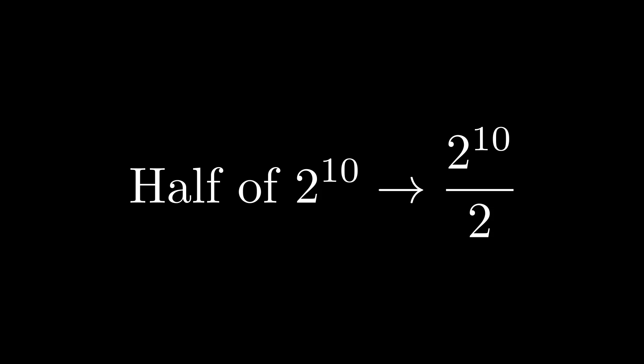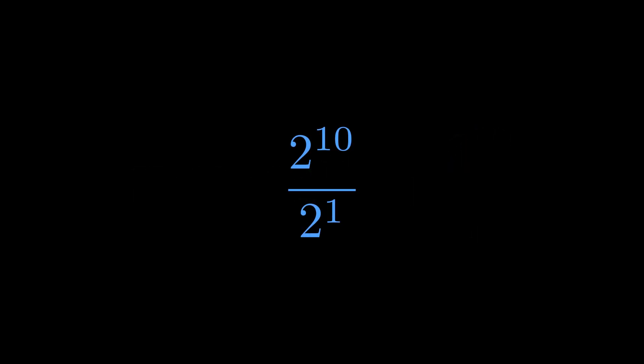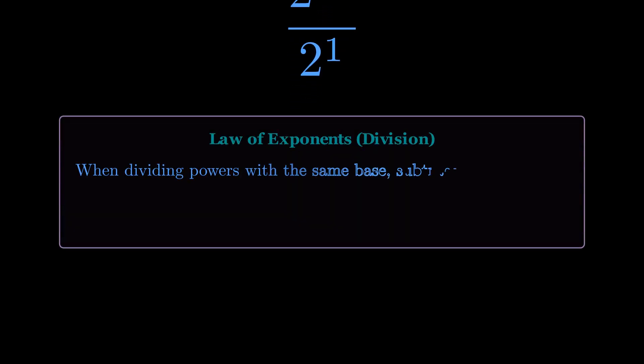So we can write this problem as a fraction: 2 to the power of 10 divided by 2. Now to make things a little clearer, we can remember that any number by itself is really that number to the power of 1, so we can rewrite the 2 in our denominator as 2 to the power of 1.